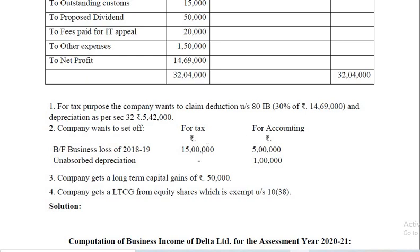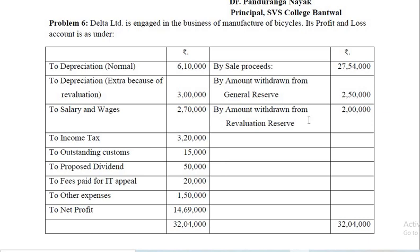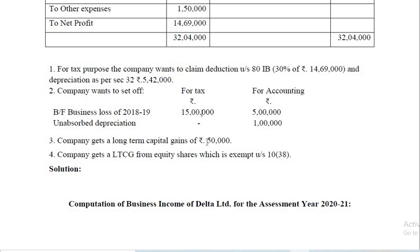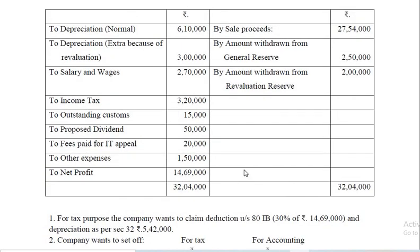Third, the company gets a long-term capital gain of 50,000. Looking at the credit side of the profit and loss account, it is not there — it is not credited. So while computing total income, you have to take this under capital gains. There is also one more transaction: the company gets long-term capital gain from equity shares which is exempt under Section 10(38). This is also to be taken while computing total income, but it is exempt. So under capital gains, 50,000 is taxable whereas long-term capital gain from equity shares is exempt.